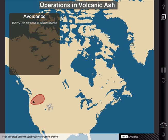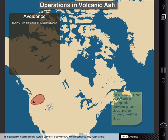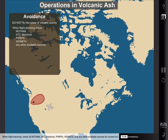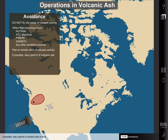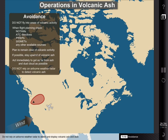Flight into areas of known volcanic activity must be avoided. This is particularly important during hours of darkness or daytime instrument meteorological conditions when volcanic dust may not be visible. When flight planning, check all NOTAMs, ATC directives, pilot reports, SIGMETs, and any other available sources for current status of volcanic activity. Plan the flight to remain well clear of reported volcanic activity. If possible, stay upwind of volcanic ash or dust. When flying near an erupting volcano, act immediately to get as far from the ash and dust cloud as possible. Do not rely on airborne weather radar to detect and display volcanic ash and dust, as these systems are not designed to detect the very small ash and dust particles.